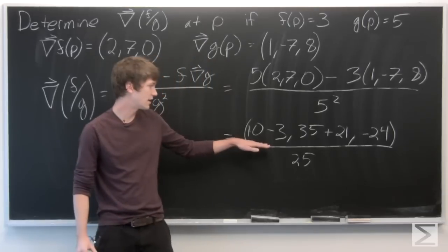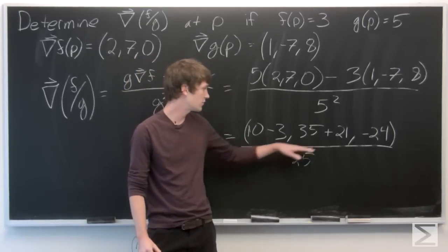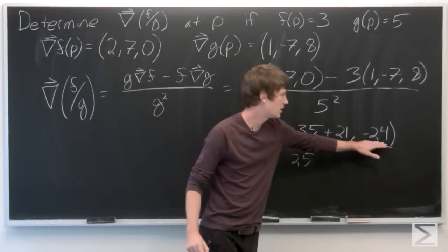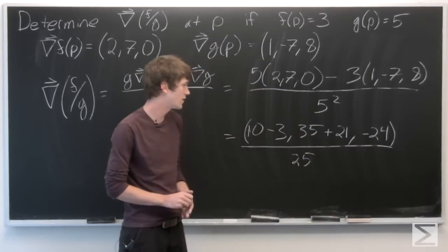And we see that that equals the vector (10 - 3, 35 + 21, -24), all over the quantity 25.